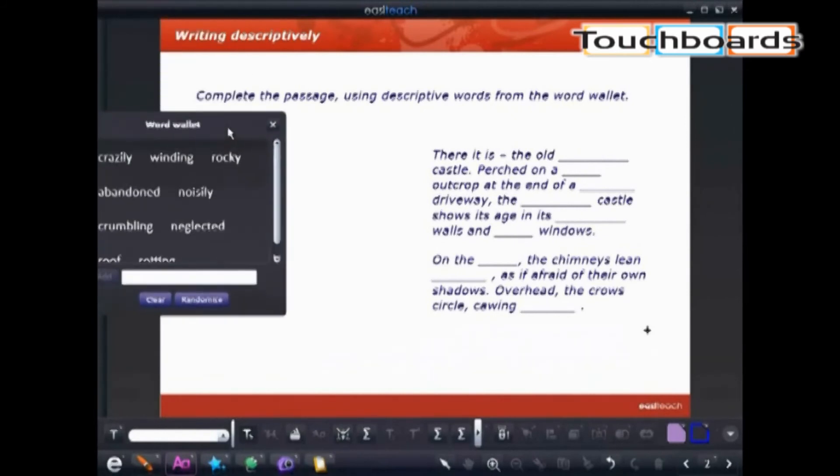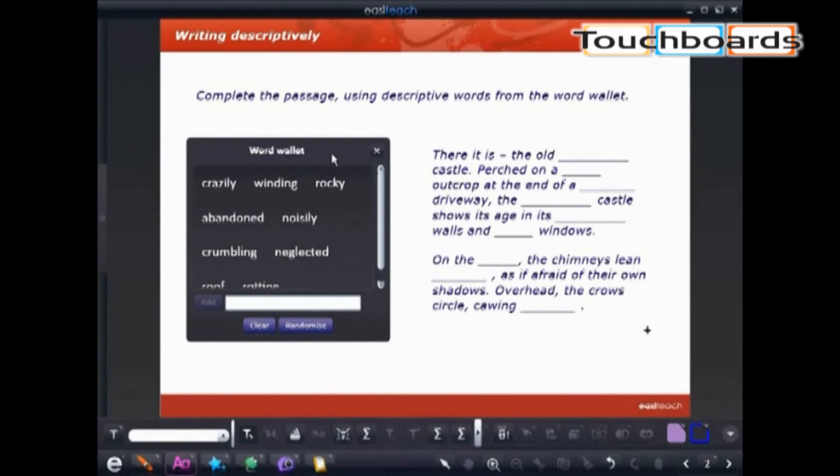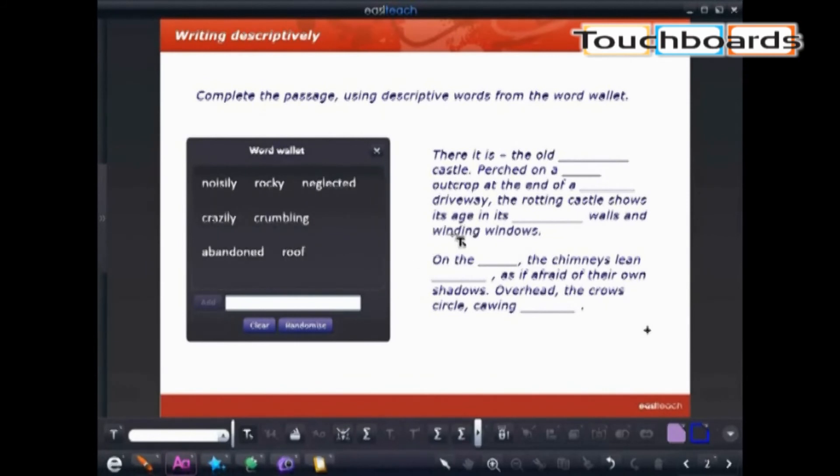When we open the word wallet, those words are already in the wallet. We can drag it to the screen and randomize those words, mix them up as many times as we wish. We even have the option to add our own words. Then the students can simply drag the words back into the passage where they belong, adding the more descriptive words in this example.